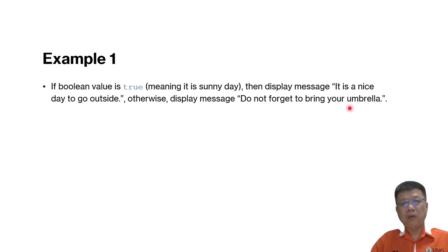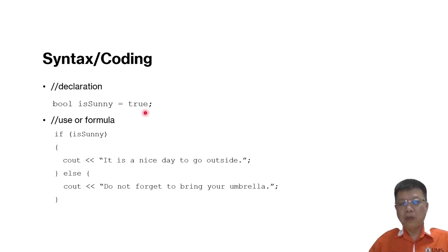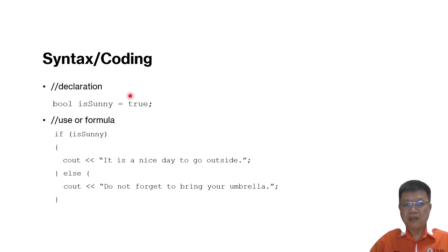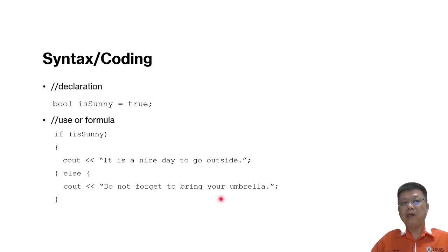When we transfer this to the programming part, we declare a boolean. In this example, we declare boolean variable 'is_sunny' and assume the case is true, meaning today is a sunny day. When we test it, if the condition is true we output 'it is a nice day to go outside'; otherwise if it is false, we output 'do not forget to bring your umbrella.'